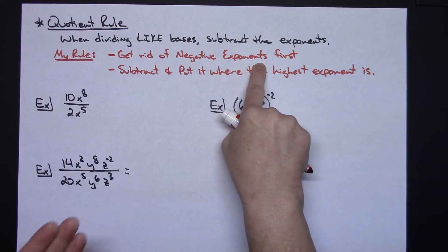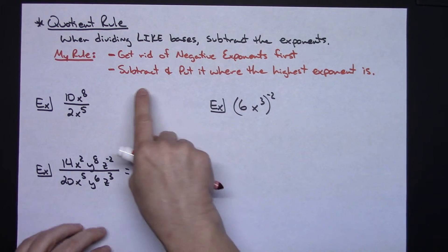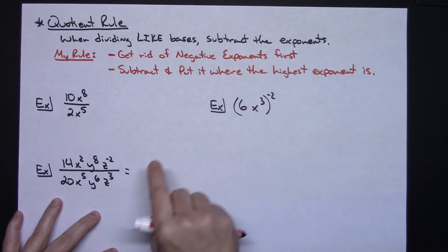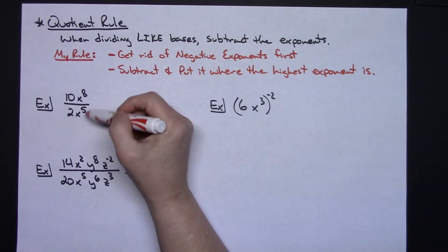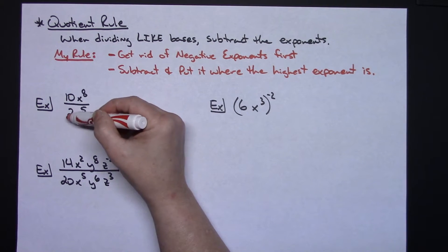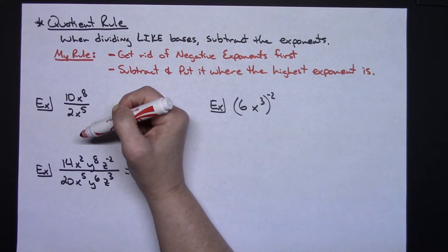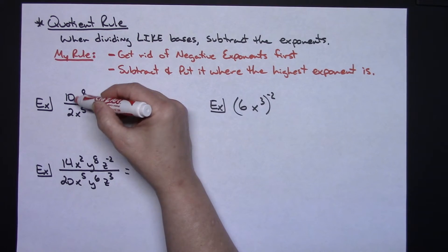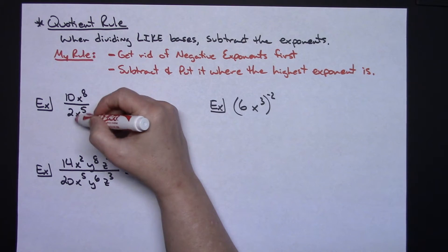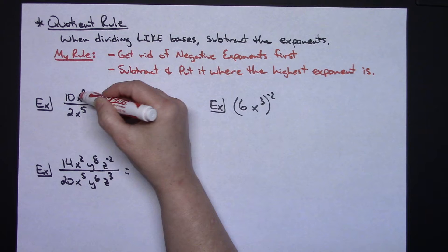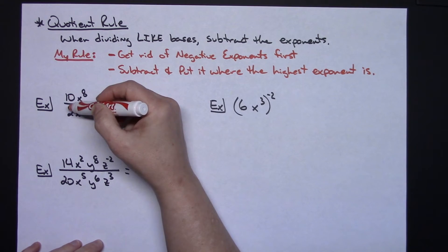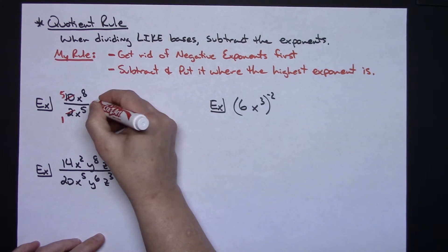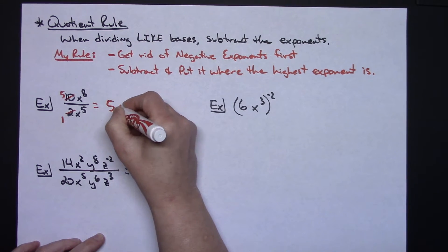Alright, so working this out on the first quotient example. Coefficients — the rules don't apply to them, so 10 divided by 2 gives me a coefficient of 5. Now on the x's, I subtract like normal: 8 take away 5 gives me 3. Since x to the 8th is the higher power compared to x to the 5th, my x to the 3rd goes in the numerator. So the coefficient 5 and x to the 3rd are both in the numerator, giving me 5x to the 3rd.